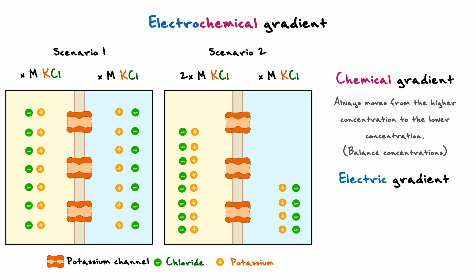For the electric gradient, this means that ions will always naturally move to the opposing charge in comparison to their own, such that the net charge of the system is as close as possible to neutral or zero. In some way, we can say that for ions, their ideal situation is to be equally as concentrated on either side and also to be electrically neutral as a system.